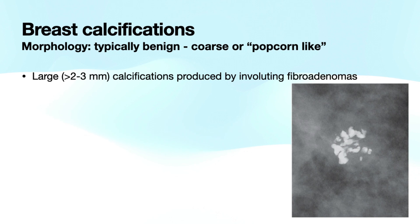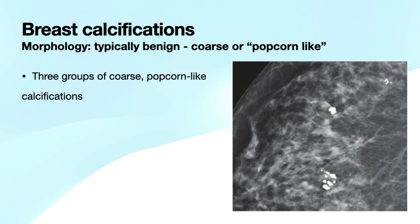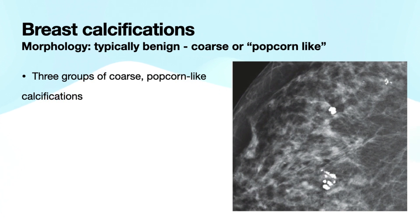I'm going to talk about another typically benign type of calcification: coarse or popcorn-like. These large calcifications that are two to three millimeters in size or larger are produced by involuting or degenerating fibroadenomas. Here is a group of these typically benign coarse or popcorn-like calcifications — you can see these are multifocal, and multiplicity is reassuring of benignity, especially if bilateral. However, when calcifications are this coarse, they are considered benign by default given their popcorn-like appearance, so even a single group of these calcifications should be given a BI-RADS 2 assessment.